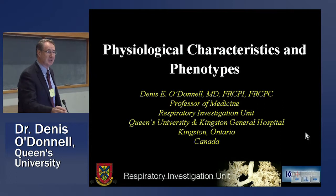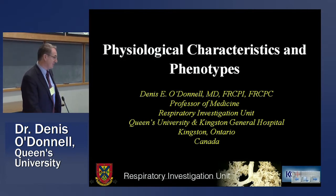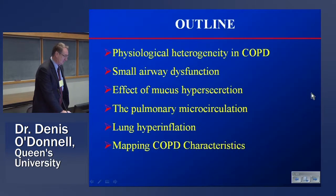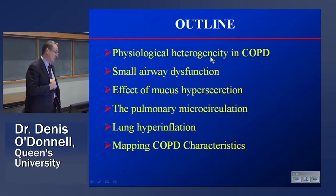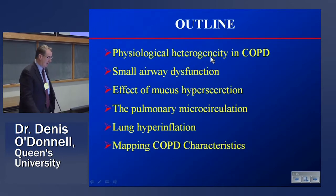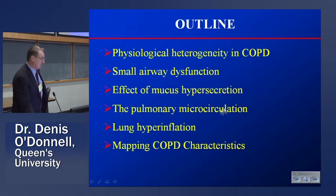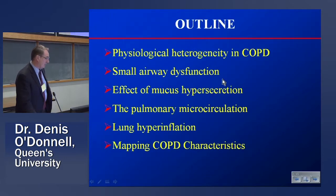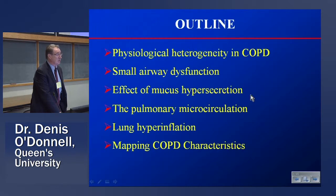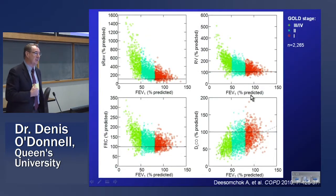My task is to talk about the physiological characteristics and phenotypes, and this is a fairly daunting task because I wasn't aware that any physiological phenotypes actually existed. So we have to start somewhere. I'm going to talk about the heterogeneity of this disease in physiological terms, some well-established attributes linked to clinical outcomes — small airway dysfunction, physiological effects of mucus hypersecretion, the neglected pulmonary microcirculation, lung hyperinflation, and an approach to studying physiological phenotypes: whether they're valid, whether they exist, and whether they could be specifically targeted for special treatments.